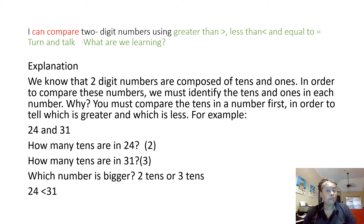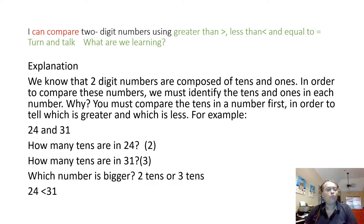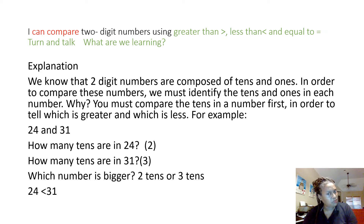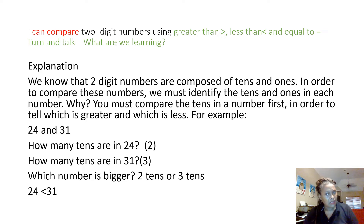We're learning: I can compare two-digit numbers using greater than, less than, and equal to as symbols. Two-digit numbers are composed of some tens and some ones. In order to compare these numbers, we must identify the tens and the ones in each number. You have to tell which number is bigger in the tens place. For example, let's look at twenty-four and thirty-one.